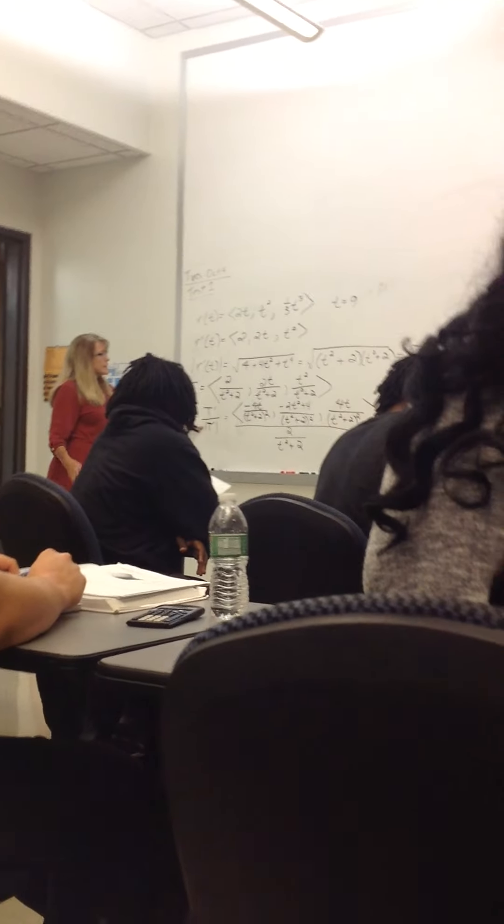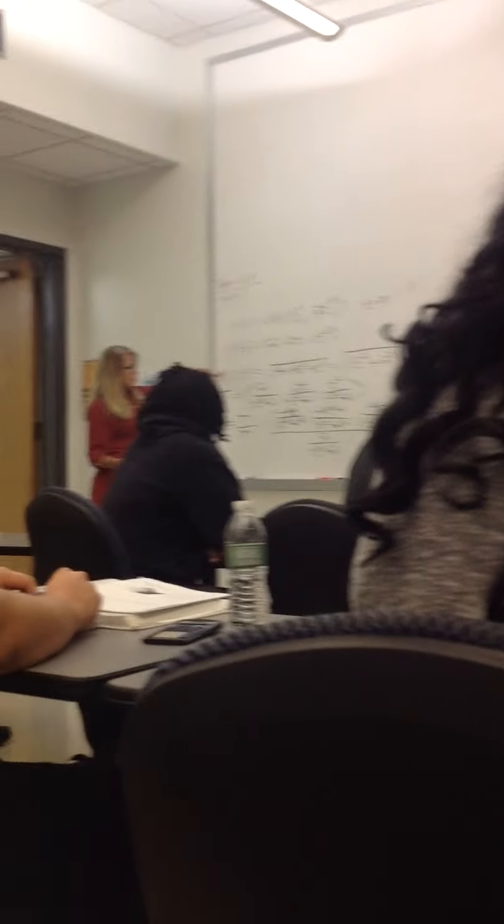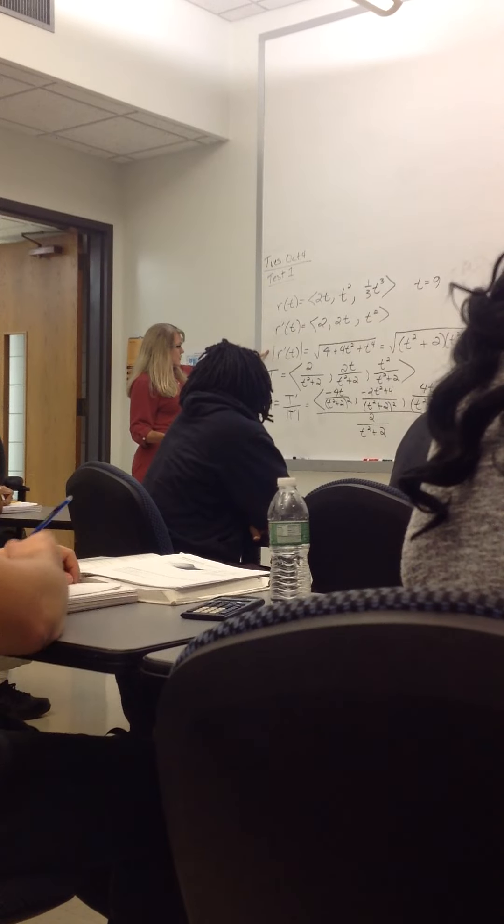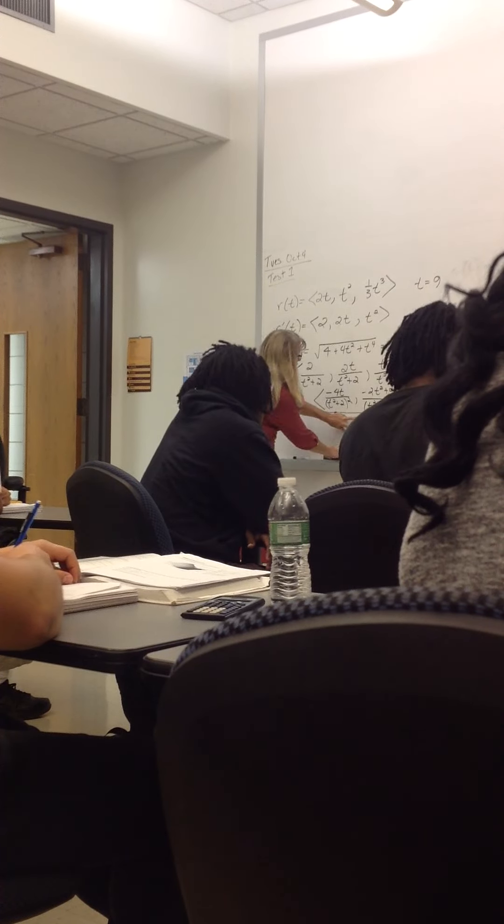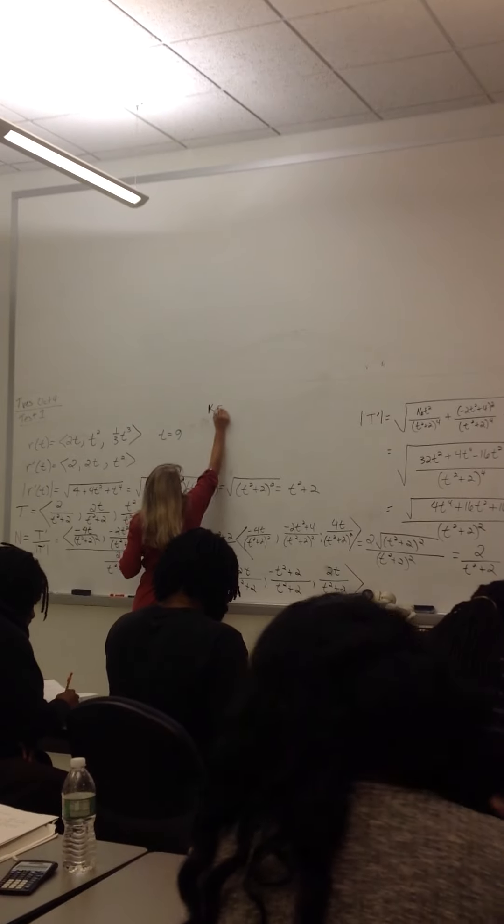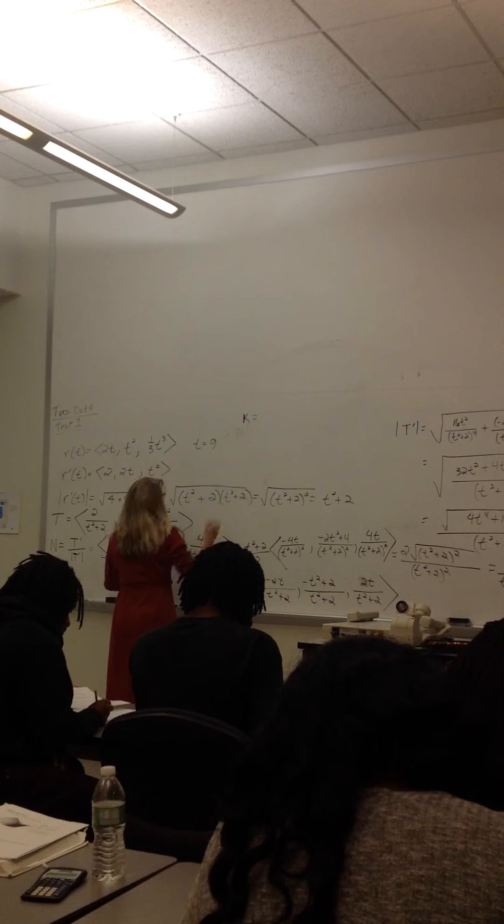t prime divided by the length of r prime. So we actually already have all the stuff for k. We have the length of t prime, which is this here.